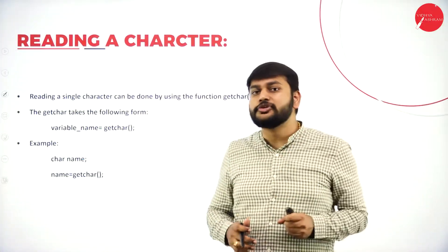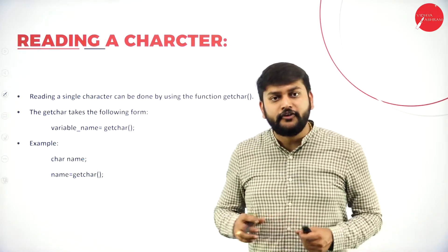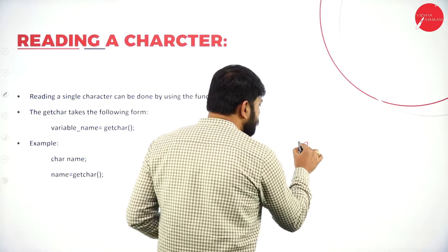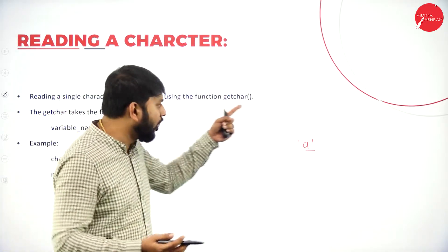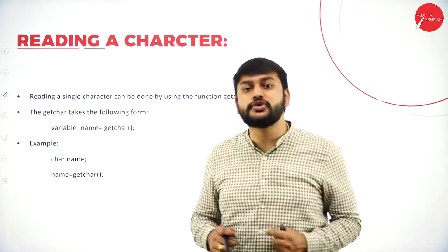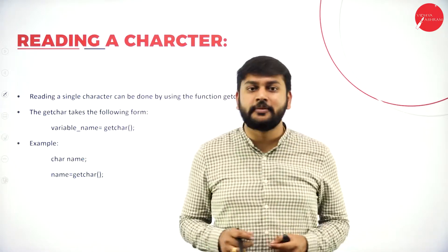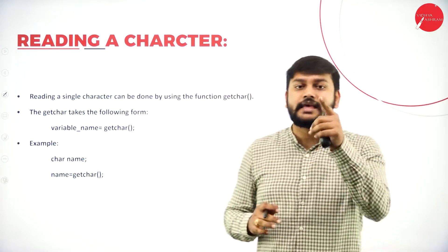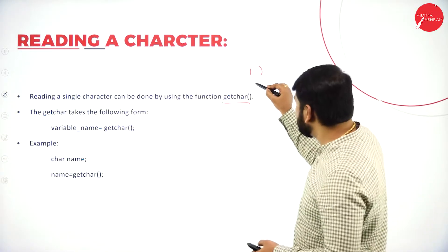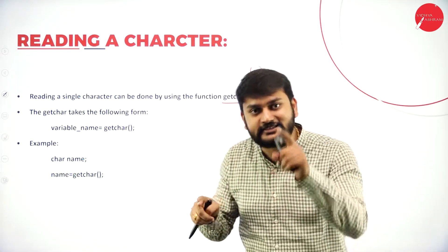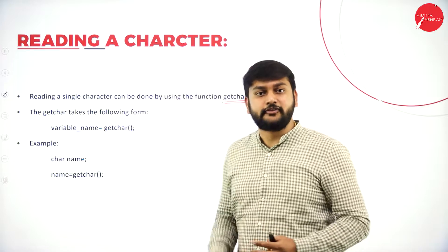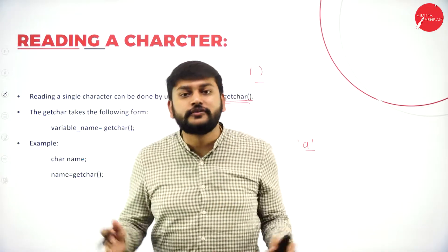The first topic I will discuss is how do I read a character from the user. If I want to read a single character — for example, just the letter A — that is a single character. A group of characters is what you call a string, but I am speaking about only one character now. For that, you need to use one of the predefined functions: that is getchar(). Wherever you see parentheses, you should treat it as a function. How do I use this getchar function and what is the right syntax is what you need to understand here.